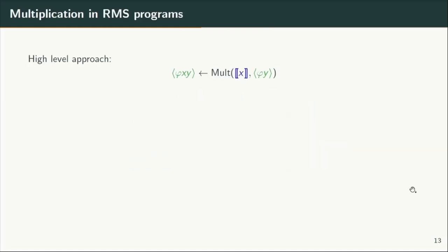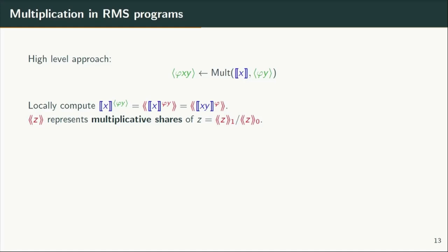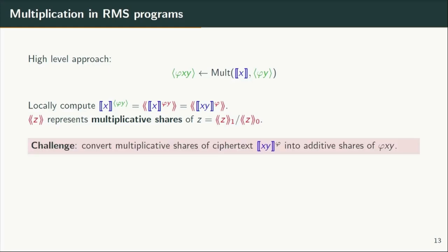Next we discuss a high-level approach for how RMS multiplication is carried out in all HSS constructions — this is where the two homomorphic schemes interact. Each party locally raises the encryption of x to their additive share of y. By the properties of the encryption scheme, the parties end up with multiplicative shares of the encryption of xy raised to phi. That is, there is a bilinear mapping between additive secret shares and additively homomorphic encryption. Here we define the multiplicative share of z to be elements z1 and z0 held by the two parties such that z equals z1 times z0. Hence the challenge of an RMS multiplication reduces to converting multiplicative shares of the encryption of xy raised to phi into additive shares of phi times xy.